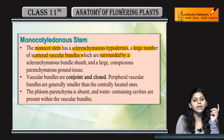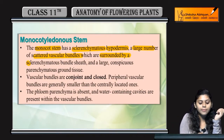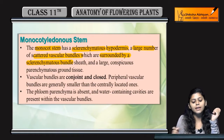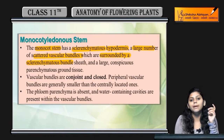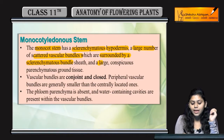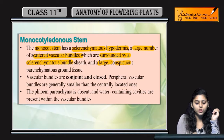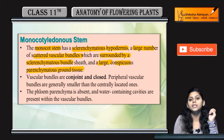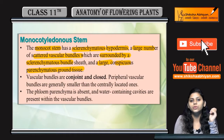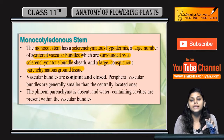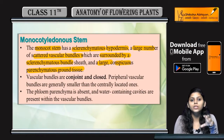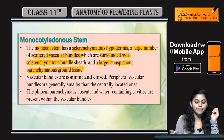And they are surrounded by sclerenchymatic bundle sheath cells. They are large, conspicuous, parenchymatic ground tissues. The bundle sheath — what is it made of? It is the ground tissue.